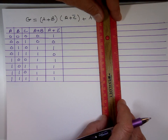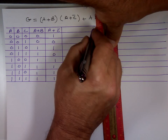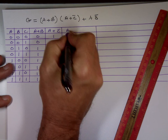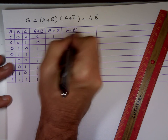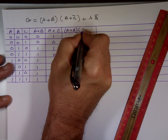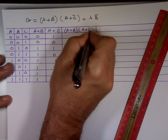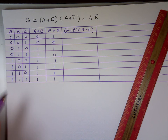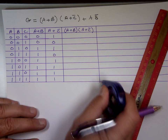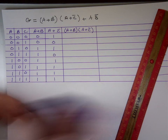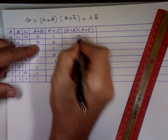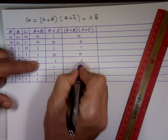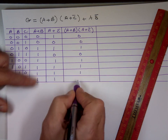Now I've got to find the product — the AND — of those two columns: A plus B, ANDed with A plus C bar. That's a multiplication. With the AND gate, once one of them is zero the result is zero. Going through: zero, zero, zero, one, zero, one, one, one, one.